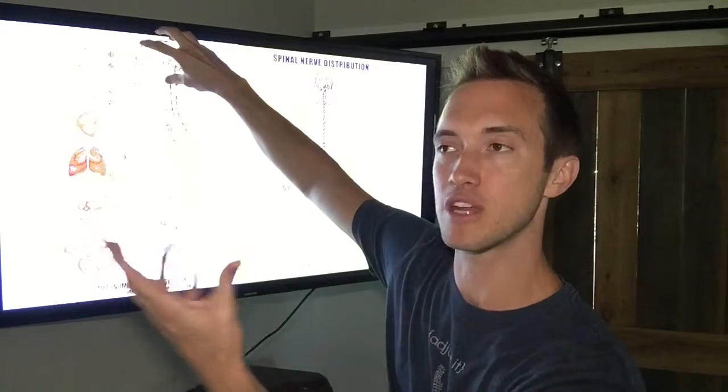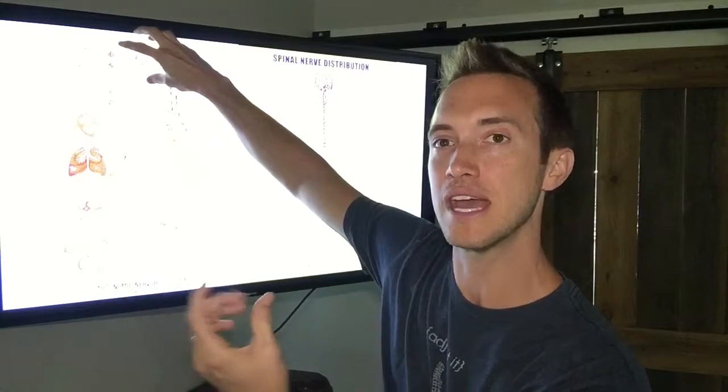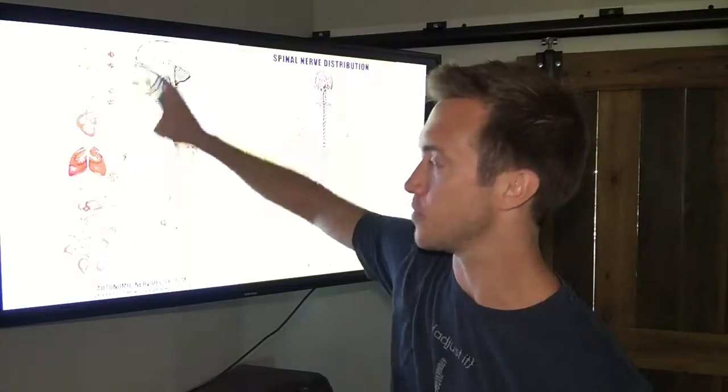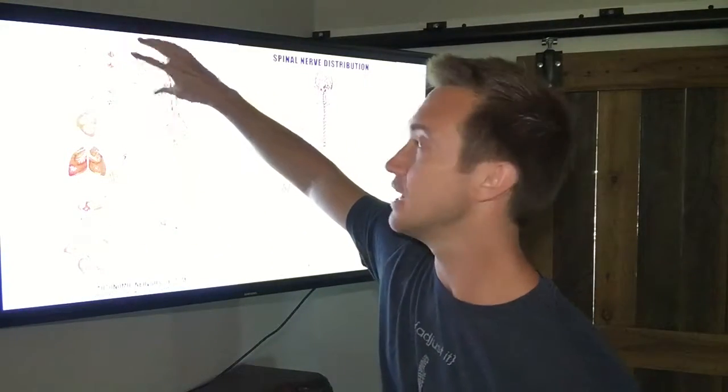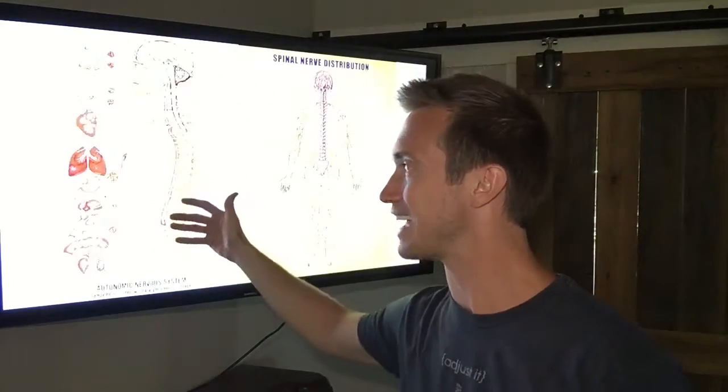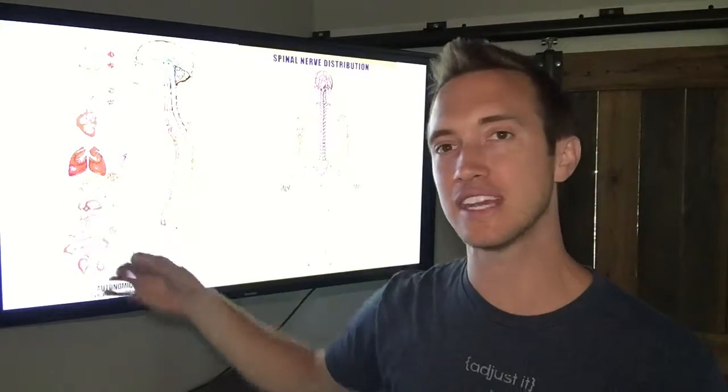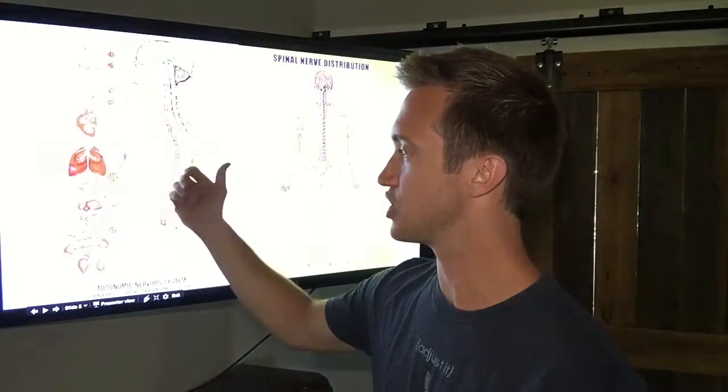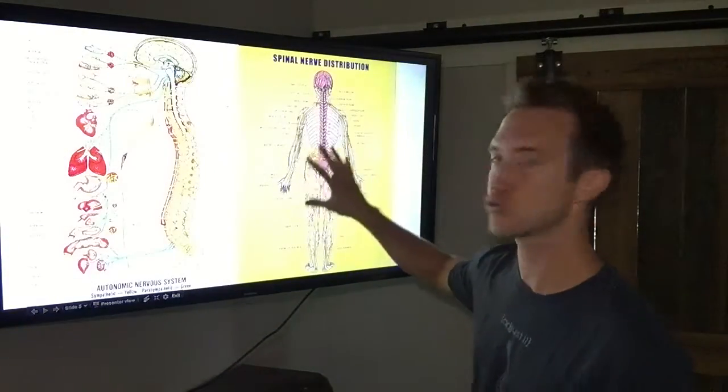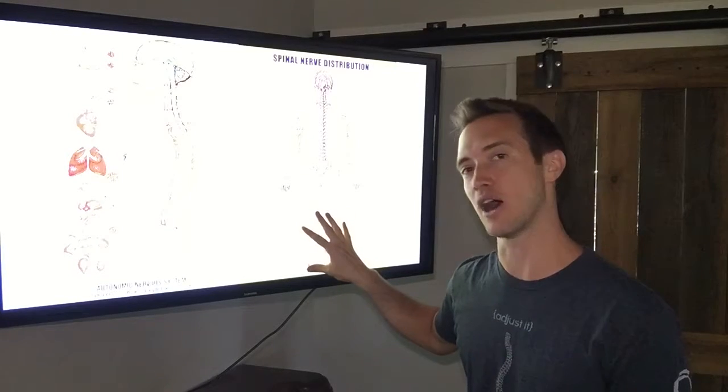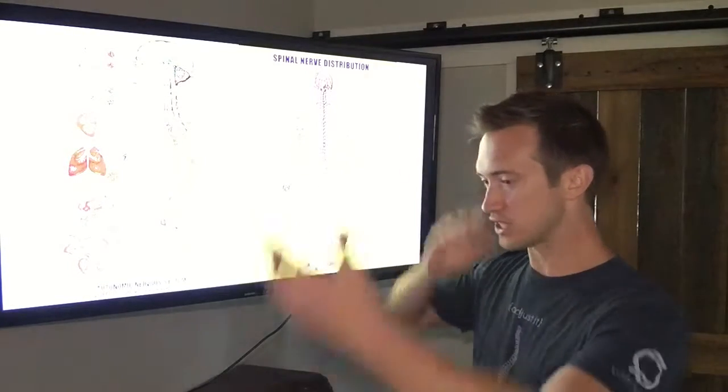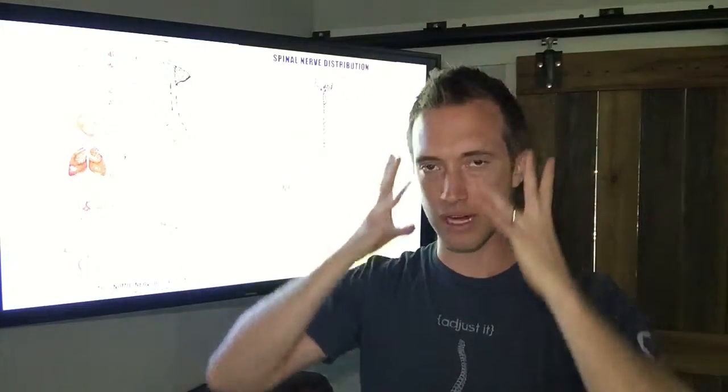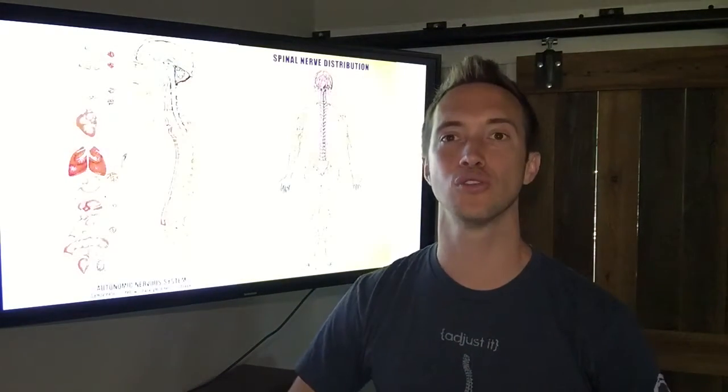So your body is constantly sending information to the brain, and then your brain receives that information. It's also receiving information from the environment, from all the stressors of your environment, and your brain then interprets all the information from the environment, all the information from your internal body, and then it sends information back down, out the nerves, and it can change your heart rate, increase your blood pressure, change your respiration, your digestion. It can change and control the muscles and the movement, the joints throughout your body.